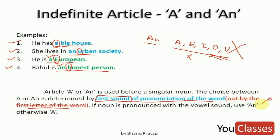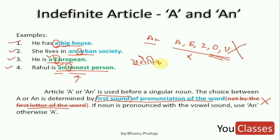This is the wrong concept taught throughout school. You have to pronounce the word and see how the pronunciation sounds. If the first sound of pronunciation is a vowel, use 'an'. If the first sound is a consonant, use 'a'. For example, 'European' is pronounced as 'Yu-ropean' — 'Yu' is not a vowel sound, so we use 'a'. Similarly, 'honest' is pronounced starting with 'O' — 'O' is a vowel, so we use 'an'.